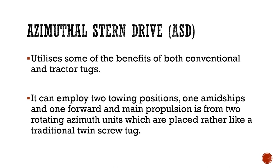Finally, we come to the azimuthal stern drive tugs, or ASD tugs. These tugs utilize some of the benefits of both conventional and tractor tugs. They can employ two towing positions — one amidships and one forward — and main propulsion is from two rotating azimuth units placed rather like a traditional twin screw.